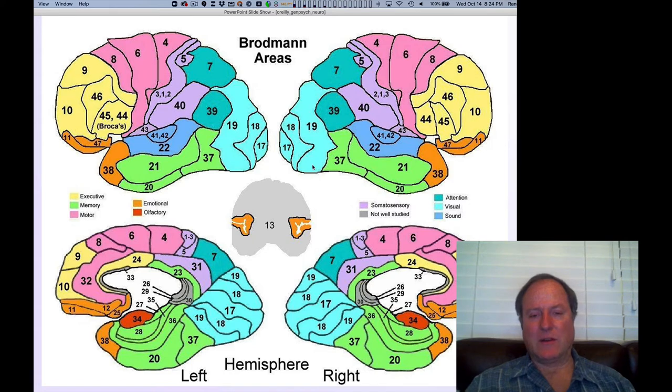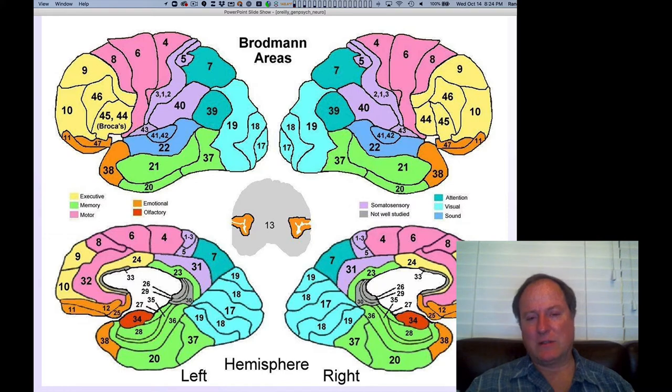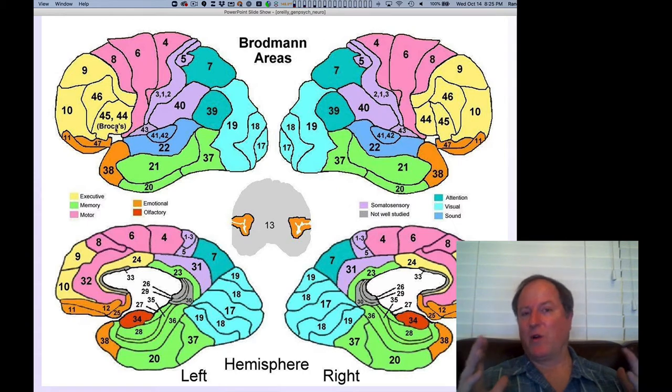It turns out there is a specialization that you can understand in terms of the anatomy, in terms of the thickness of the different little layers that make up the cortex. Those do differentiate function in these different parts of the brain. As you go on in cognitive neuroscience, you would become very familiar with these different random numbers. Area 44, 45 is Broca's area, and people generally know that.